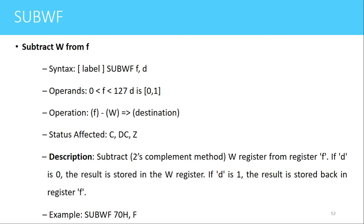The next instruction is SUBWF. The meaning of this instruction is subtract W from F, where F is the file register. The syntax is SUBWF F, D. The operand F can take any value from 0 to 127 — it can be any SFR or any memory location. D is the destination bit: if 0, the result is stored in the working register; if 1, the result is stored in the file register. The operation performed is F minus W, and the result is stored in the destination register. Three flags are affected: carry flag, digit carry flag, and zero flag. One important note is that the subtraction is performed using two's complement format.